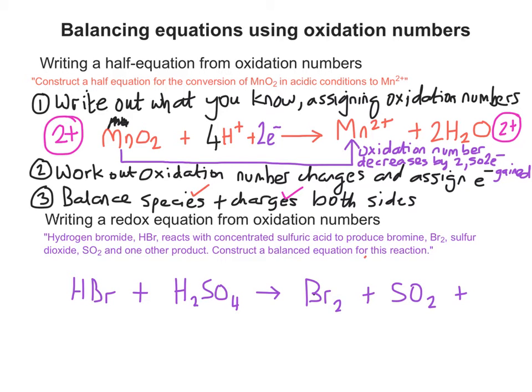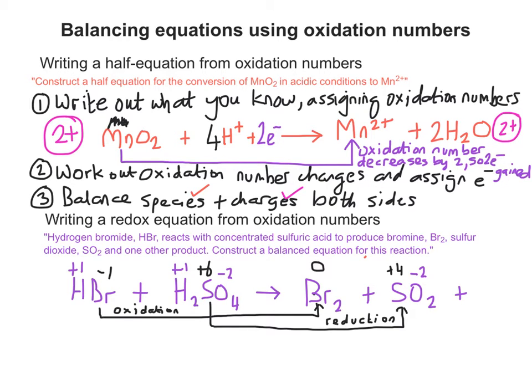Let's assign oxidation numbers. I'm going to write the ones out for things that don't change, first of all. So hydrogen doesn't seem to change at this point. We don't know what the other product is on the right-hand side, first of all. So we can just put plus one for the hydrogens to start with. And we can put in minus 2s for the oxygen. We can put in the oxidation states for bromine and for sulfur. That's where the change is happening, obviously. So we can see that bromine is being oxidized and sulfur is being reduced.